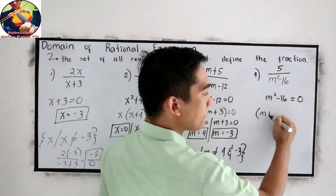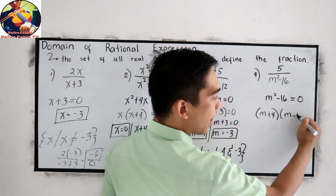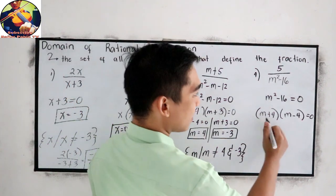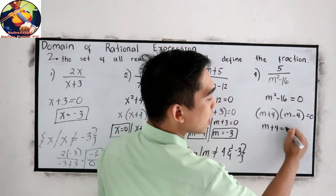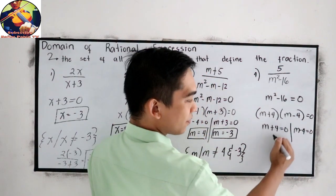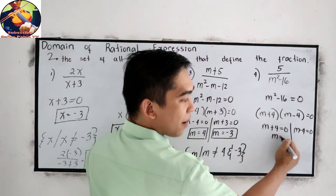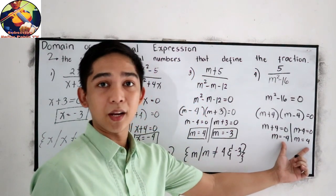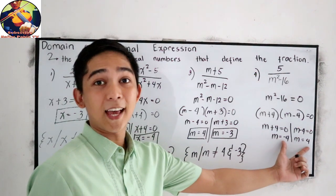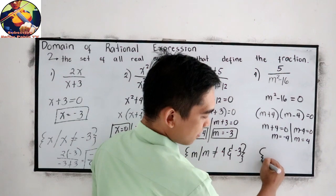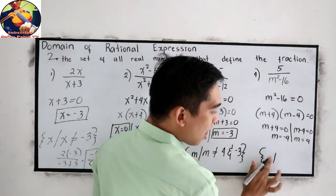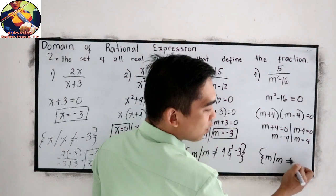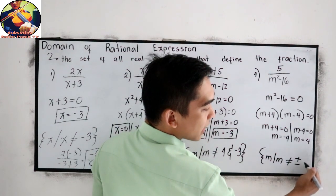And then, find the factors. Difference of two squares. That is m plus 4, m minus 4 is equal to 0. And now, solve for m. So m plus 4 is equal to 0, m minus 4 is equal to 0. So transpose, m is equal to negative 4, and m is equal to positive 4. Our restricted values. Then, writing our domain: m such that m is not equal to positive 4 and negative 4.